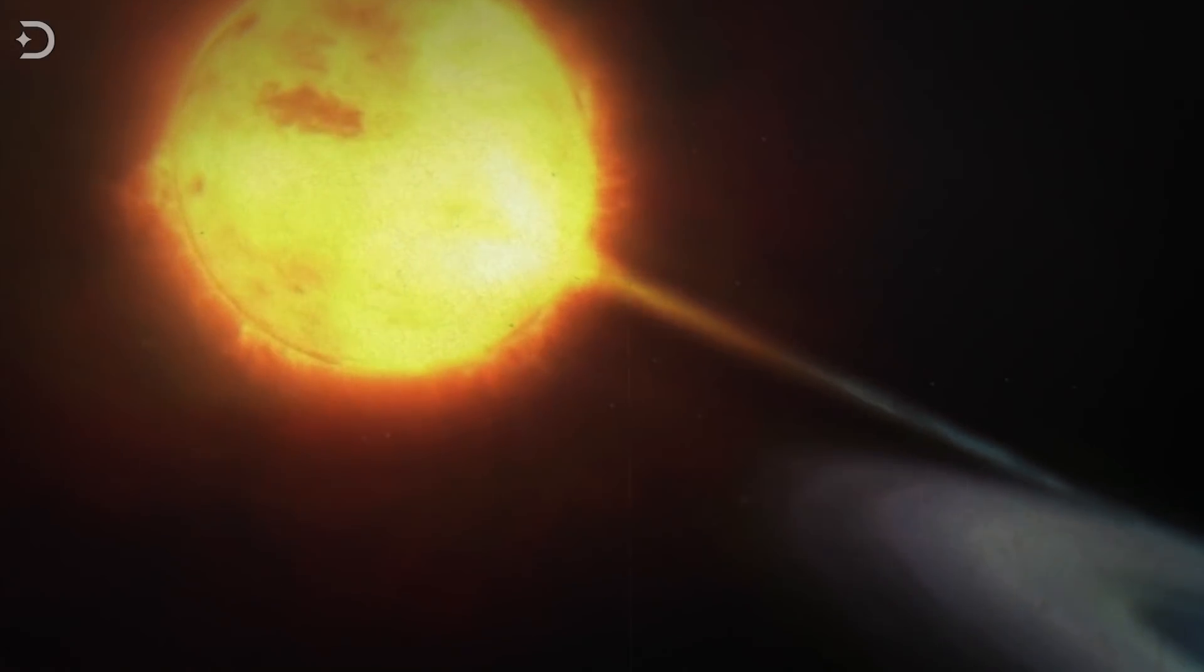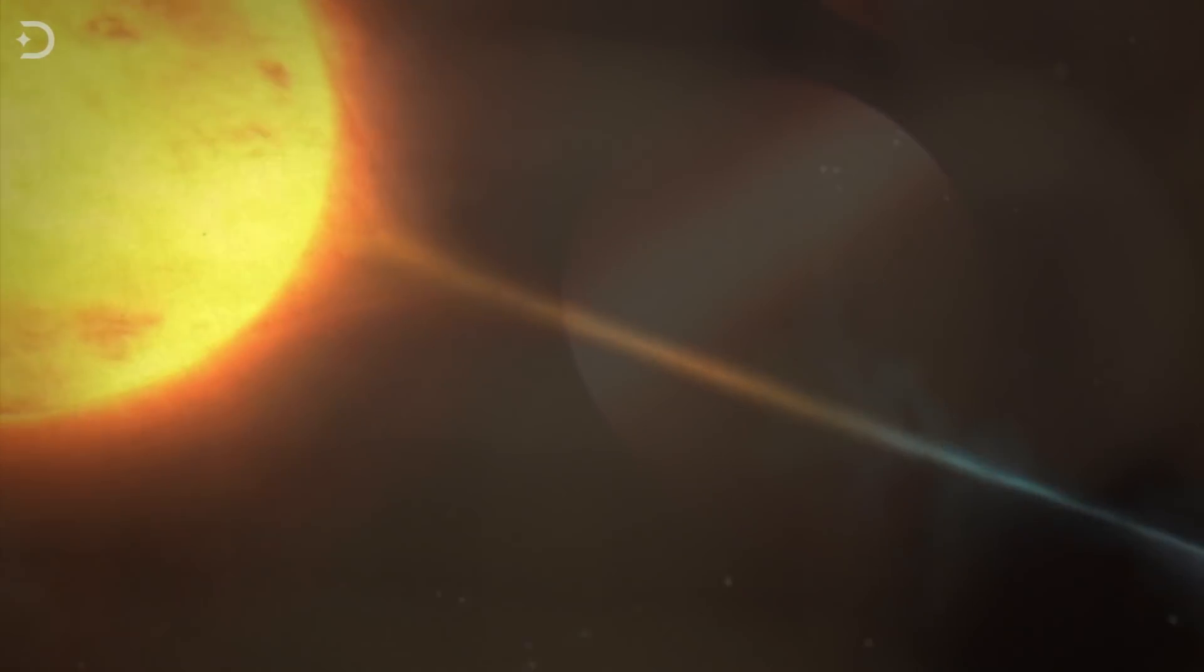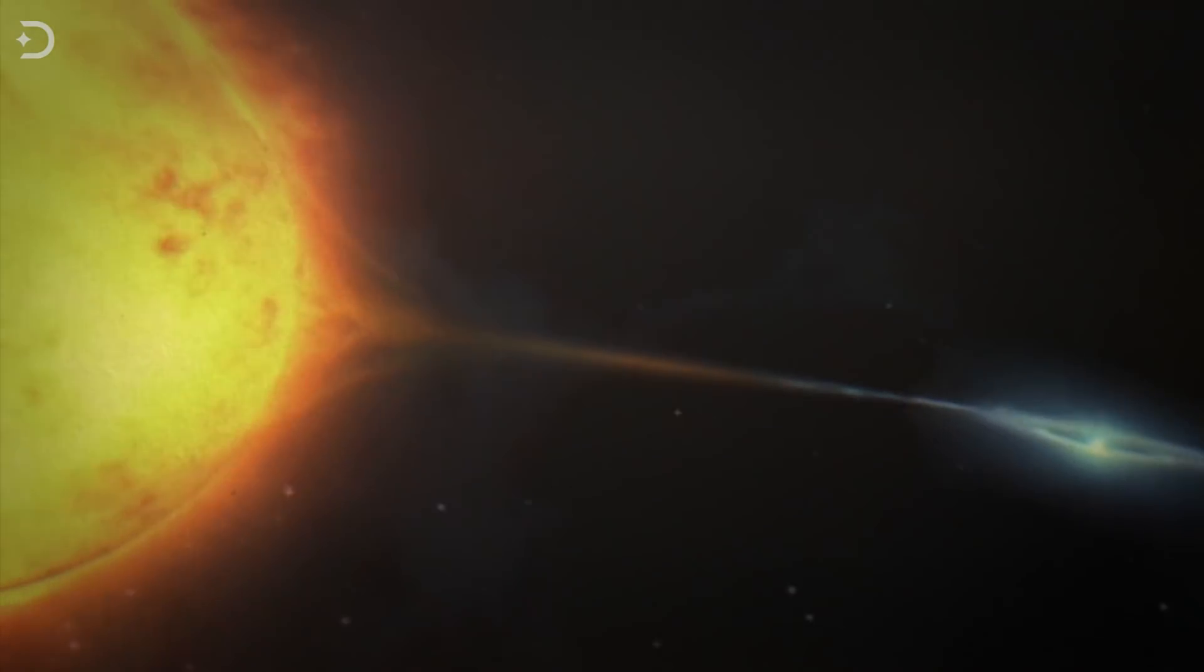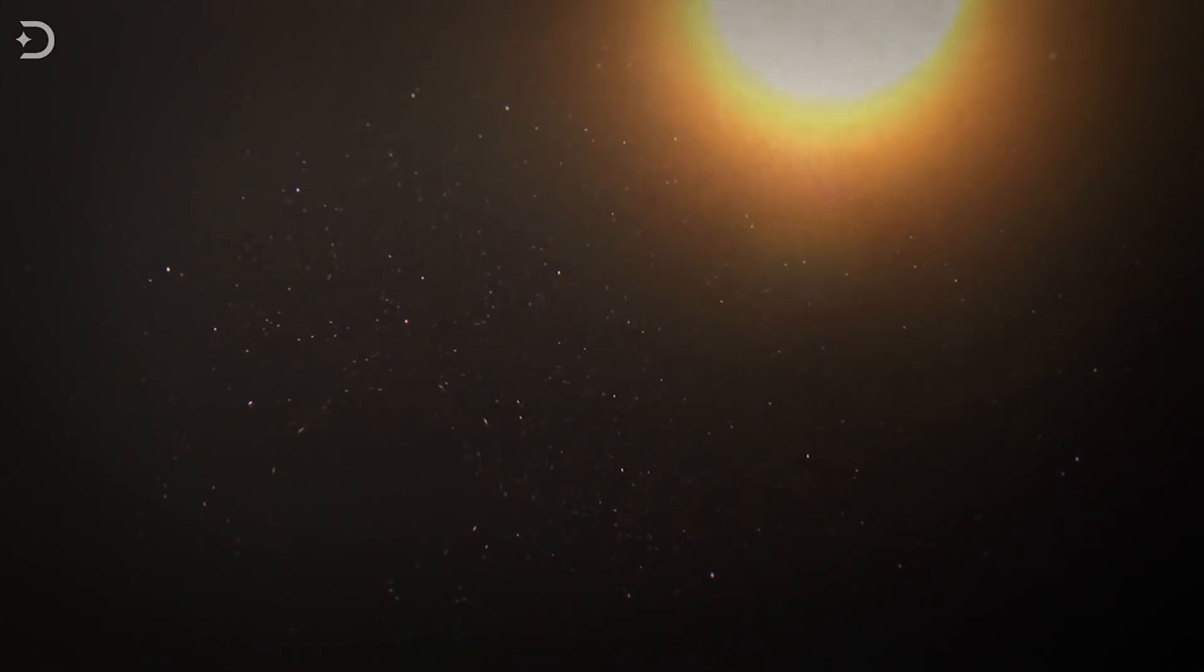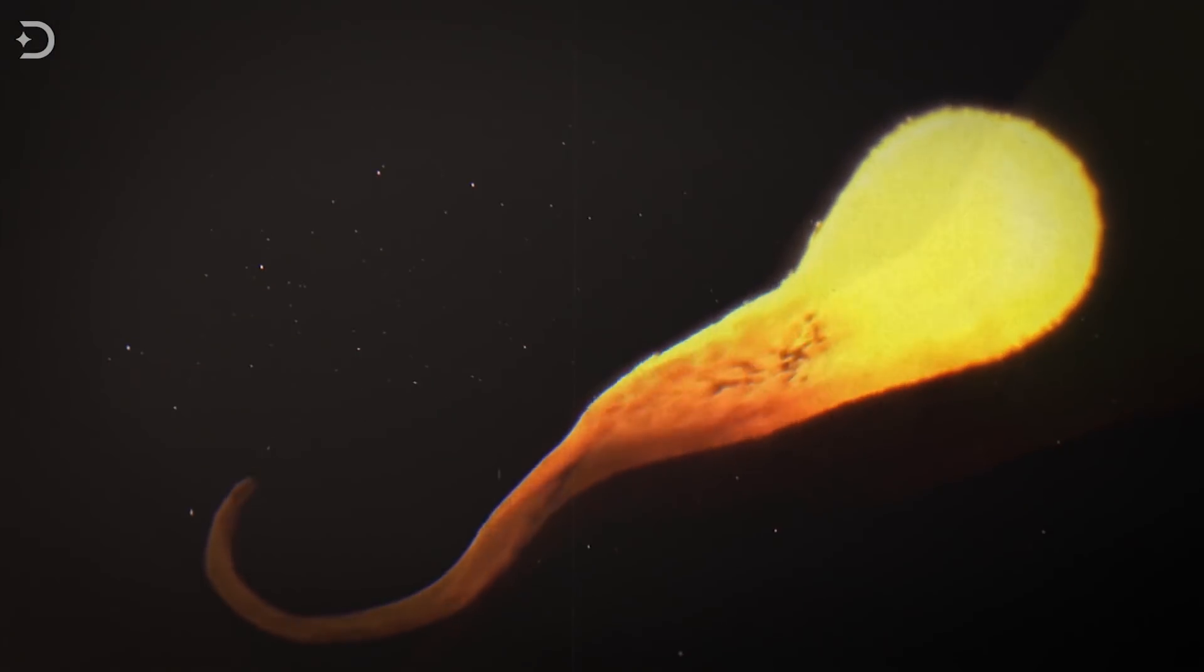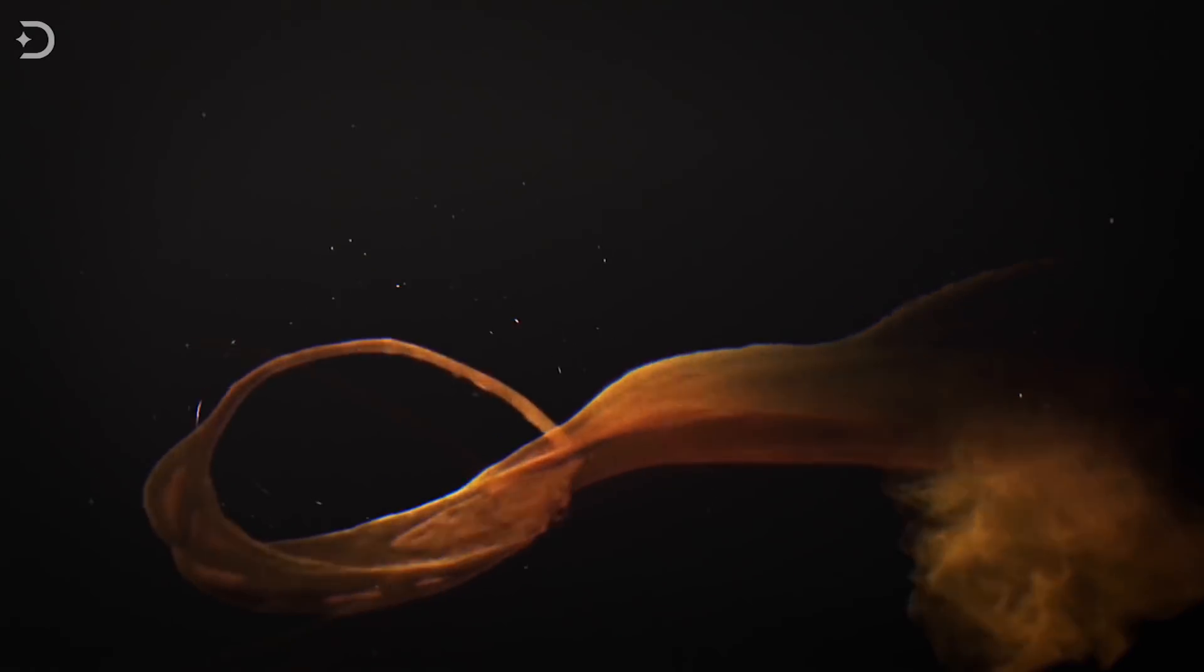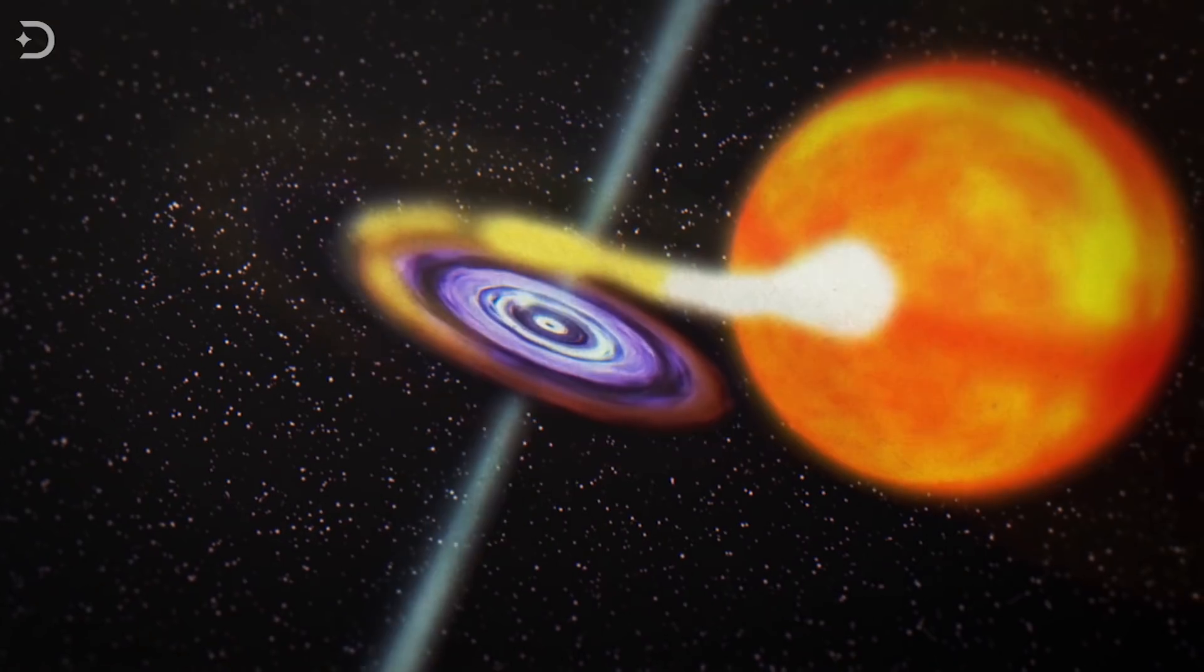It spins at 800 revolutions per second, and is sucking the gas from a closely orbiting supergiant blue star, which has a size of 19.2 solar masses and is 300,000 times brighter than the Sun. The gas heats as it's getting sucked into the black hole, forming an accretion disk and emitting bursts of high-energy X-rays and gamma rays through jets.